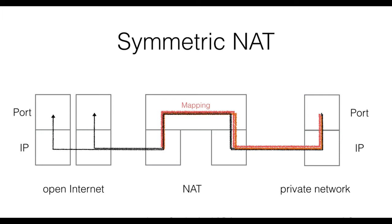We should also add that nowadays it is not that easy to classify NAT into one of the above classes, and vendors can also implement variations. The most important aspect to remember about NAT is the mapping between the internal and external network, and that they will refuse incoming connections if a mapping is not yet present. From a security perspective, also note that they will accept incoming traffic if a mapping is present.